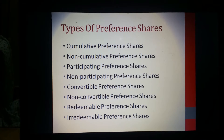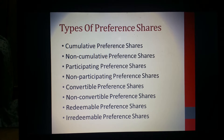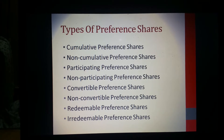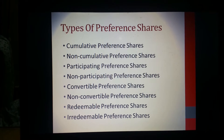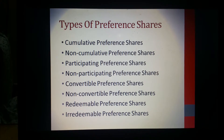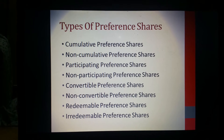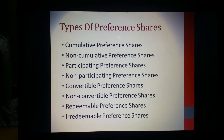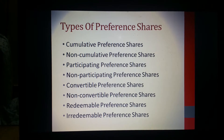Convertible preference shares are those which have the option of being converted into equity shares after a fixed stipulated period. On the other hand, non-convertible preference shares are those which do not have the option of being converted into equity shares.